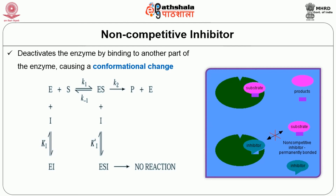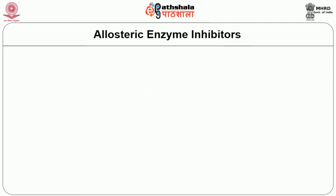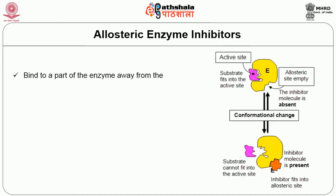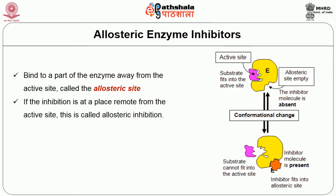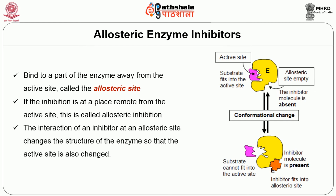Non-competitive inhibitors bind to a different part of the enzyme, causing structural alteration so the substrate can no longer bind. The last type is the allosteric inhibitor, which binds to a part of the enzyme away from the active site, called the allosteric site. This interaction changes the structure of the enzyme, causing a conformational change so that the active site is also changed and the substrate can no longer bind.